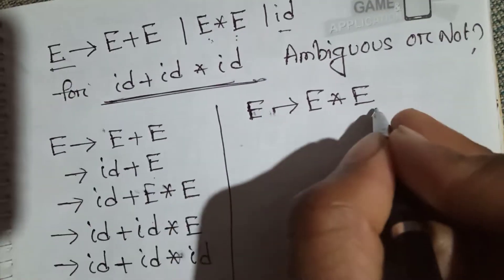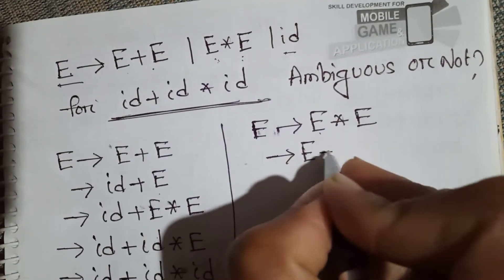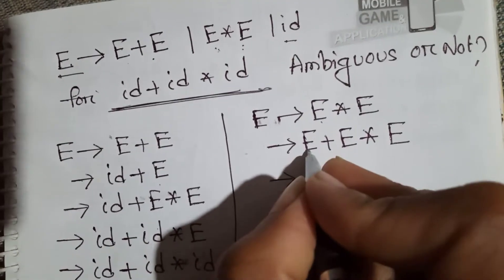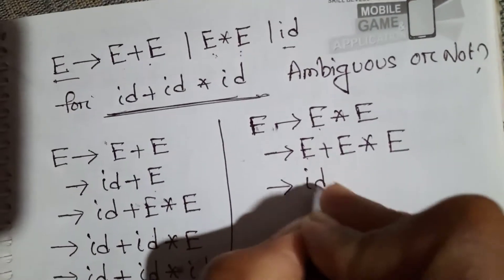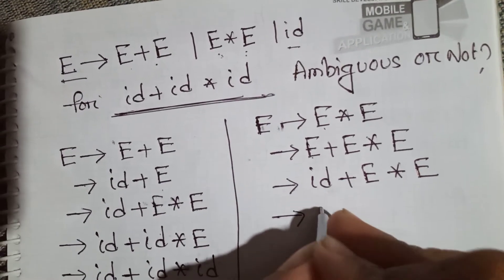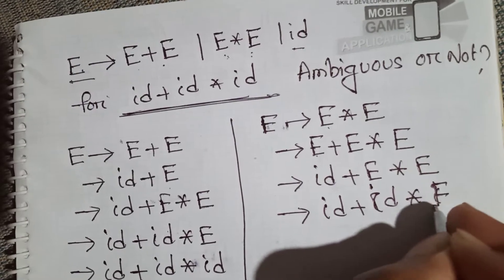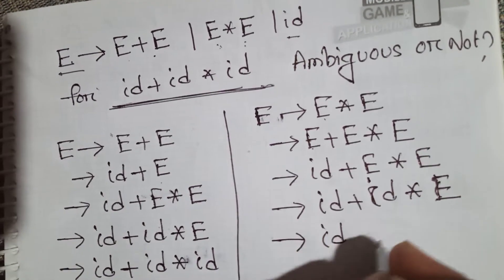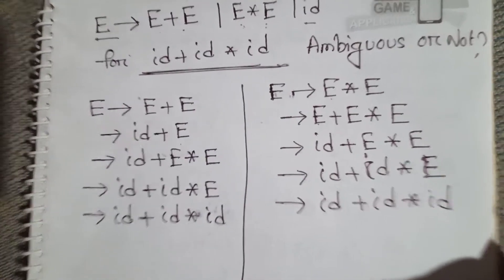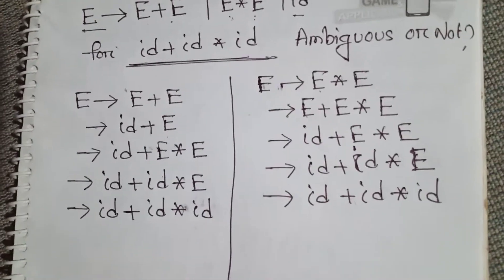For the second derivation, starting with E → E * E, and for this E we write E + E, so E + E * E. Now id + E * E, then id + id * E, and finally id + id * id. Now we have to draw two parse trees for this string.